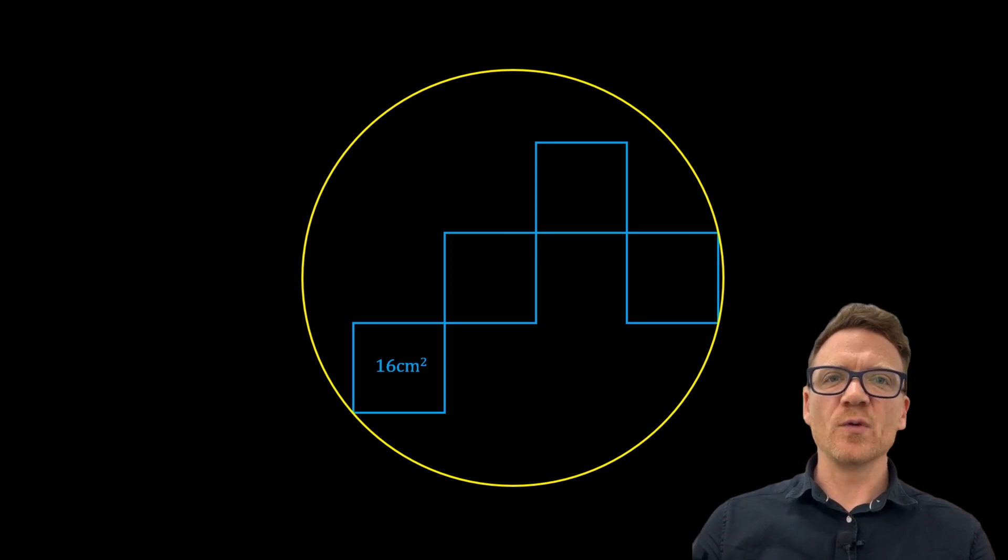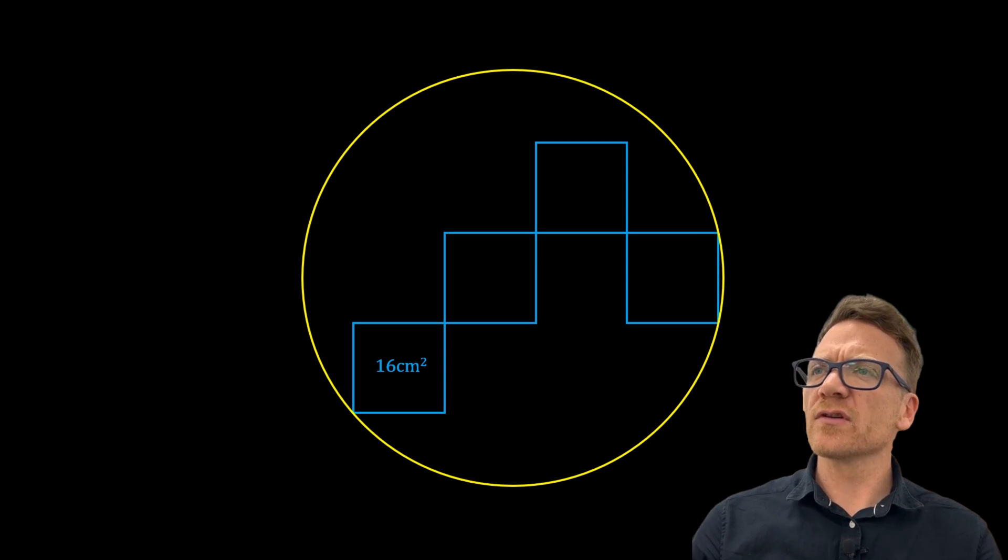Hi everyone, another nice question here. We want to find out the area of the circle. So we have a circle with four identical squares. Each has an area of 16 square centimeters.